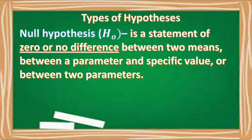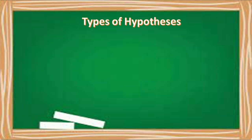The first one is the null hypothesis, denoted by H₀. It is a statement of zero or no difference between two means, between a parameter and a specific value, or between two parameters. Meaning it is a statement where two means are equal, a parameter and specific value are equal, or two parameters are equal. In symbol, we have μ₁ = μ₂.